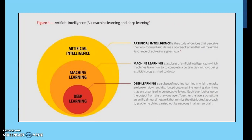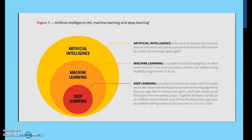Under artificial intelligence, we have machine learning, and under machine learning, we have deep learning. Artificial intelligence is a study of devices that perceive their environment and define a course of action that maximizes the chance of achieving a given goal. Machine learning is a subset of AI in which machines learn how to complete a task without being explicitly programmed. Deep learning is a subset of machine learning in which tasks are broken down into algorithms organized in consecutive layers — each layer builds upon the output from the previous layer — together constituting an artificial neural network that mimics the distributed approach to problem solving carried out by the neurons in the human brain.